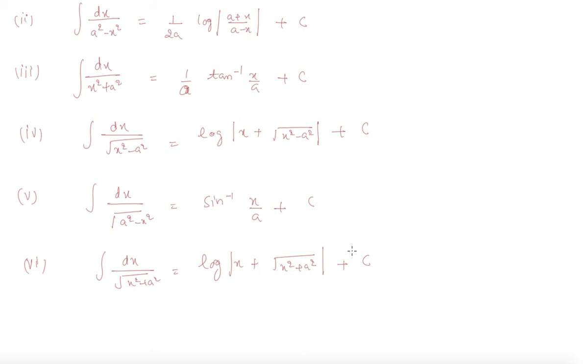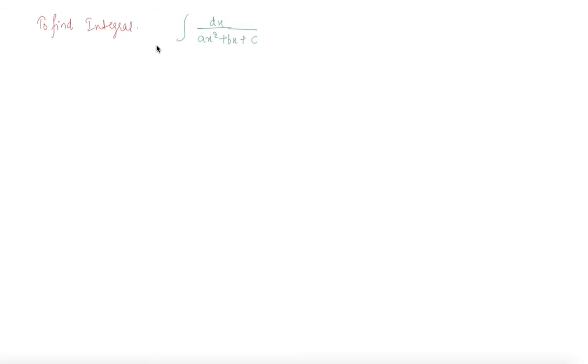Okay students, so these are some of the formulas which we are not proving and we'll use these as direct formulas in our further questions. Now let's move to another type of questions. So students, if we are given a question like dx over some quadratic ax squared plus bx plus c, we need to split the quadratic first as a perfect square. If I take a common, what I will get is b by a times x plus c by a. So now can I write x plus b by 2a whole square, and I will subtract from here b squared by 4a squared.